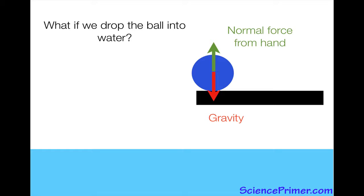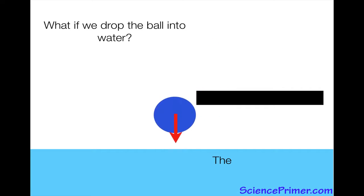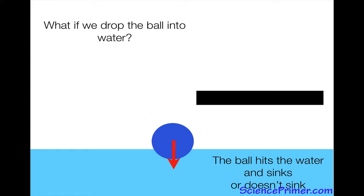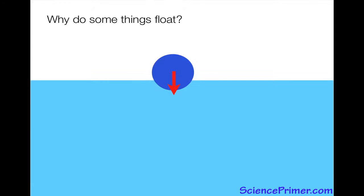When the ball rolls off, one of two things happen. Either the ball hits the water and keeps going, in which case it sinks, or it doesn't sink. The question becomes, why does the ball sink in some cases? Why do some balls sink and some not?